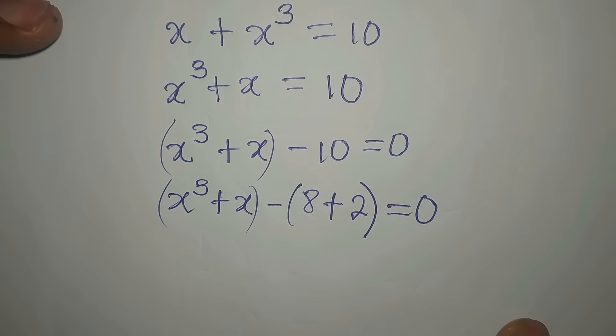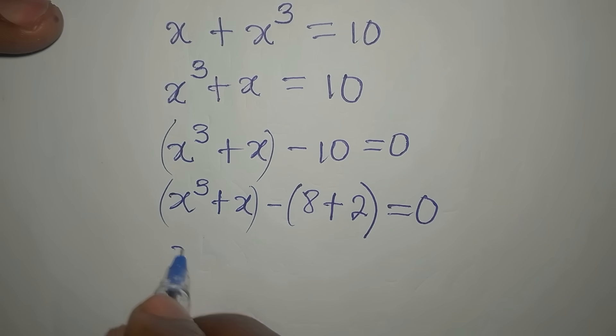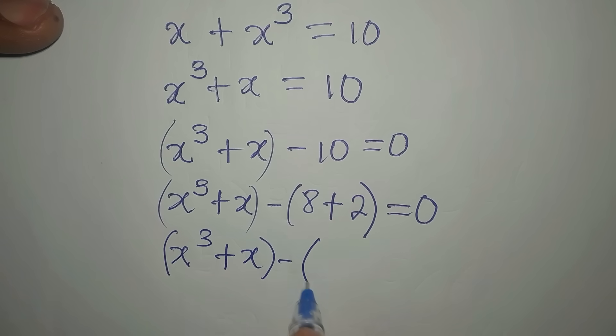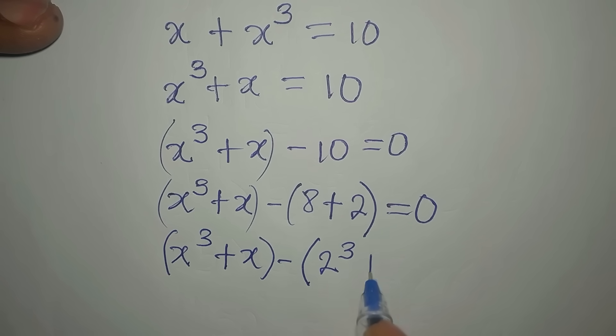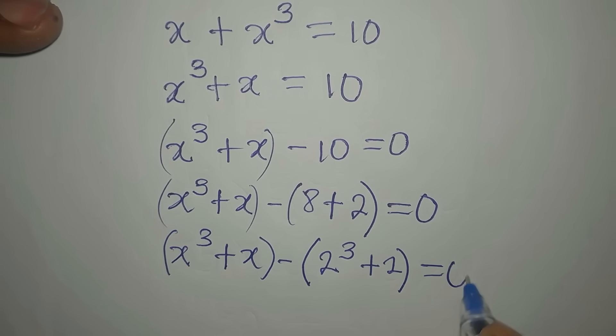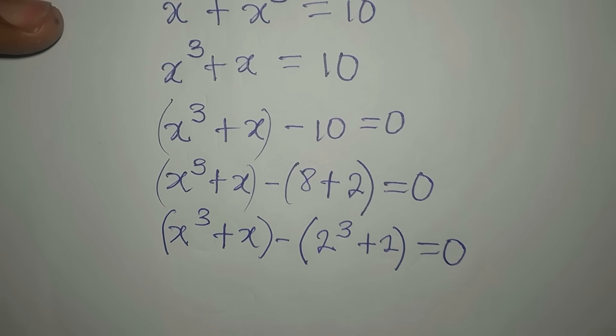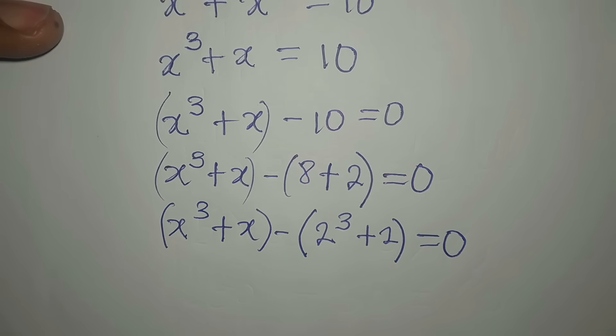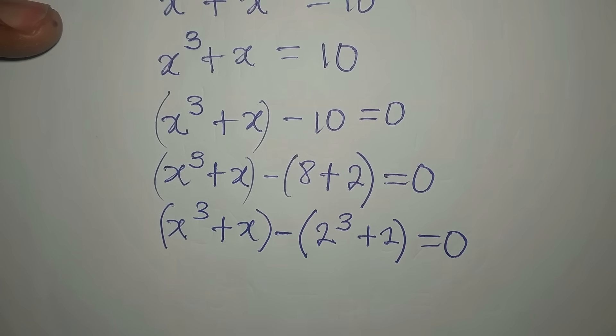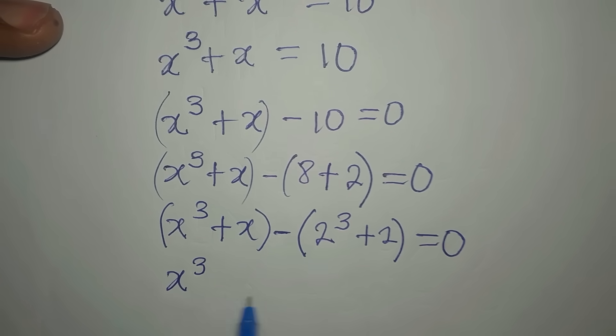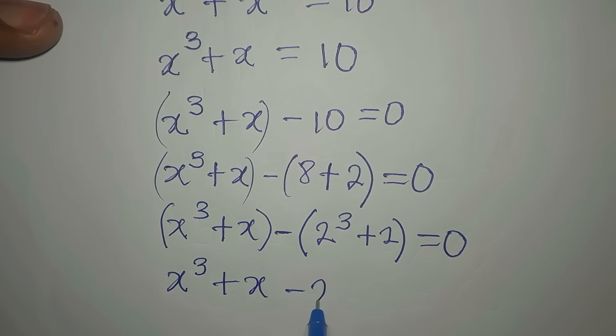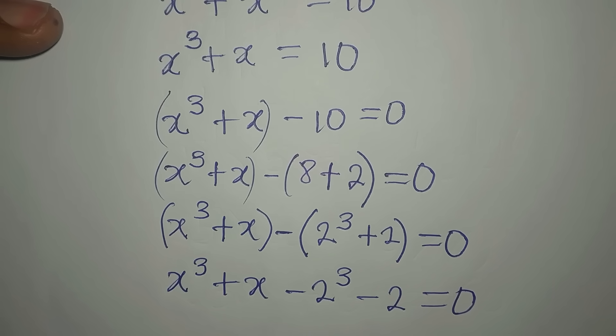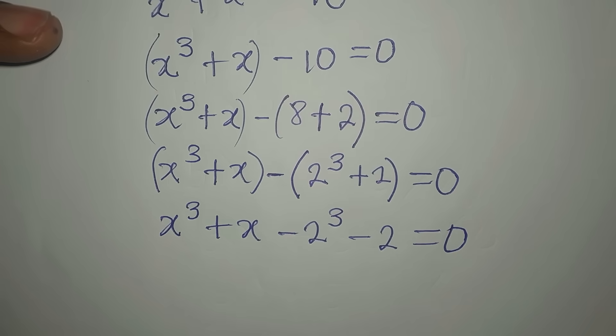Let's have x to the power of 3 plus x minus open bracket 2 to the power of 3 plus 2, this is equal to zero. Now look at the left hand side, look at this and this which is the same thing we have. Let's open the bracket: we have x to the power of 3 plus x minus 2 to the power of 3 minus 2 equals zero because the negative is expected to open the bracket.